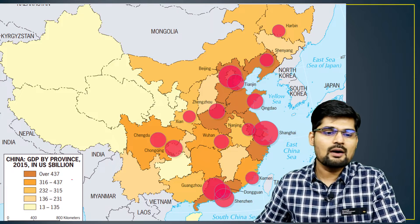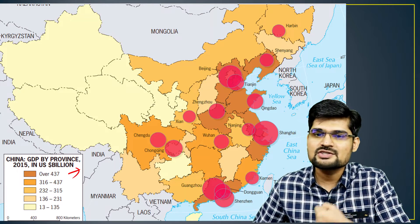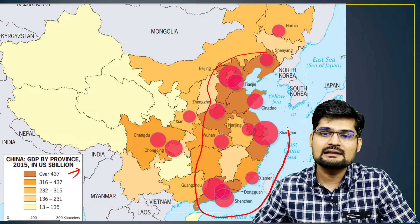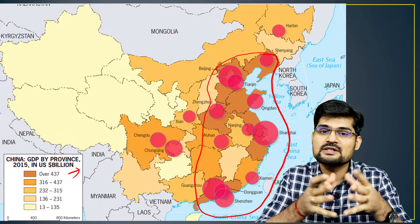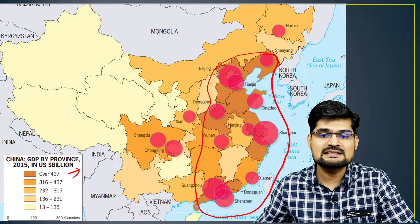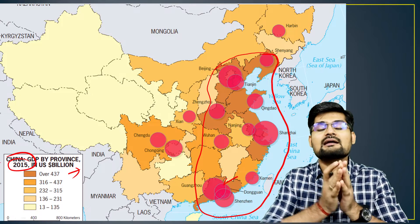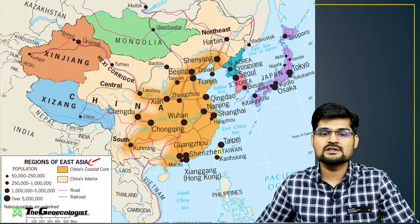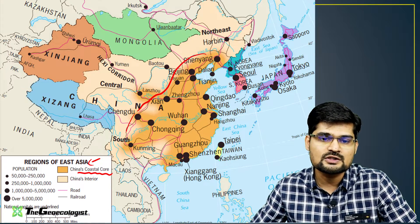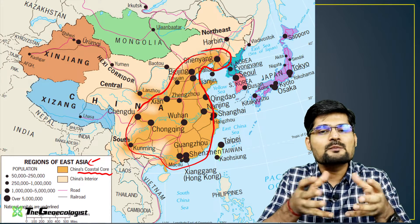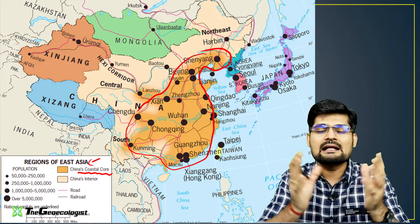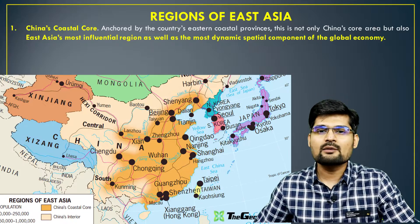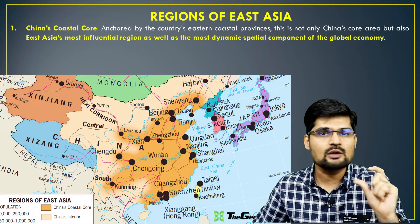Let's observe GDP in terms of cities and their population in China. The maximum GDP is concentrated on the east coast — this is the major industrial belt and location of special economic zones. Million-plus cities are booming because of these special economic zones. The coastal core of China has maximum population concentration and is the heart of this economic region, while China's interior and other areas are also developing.